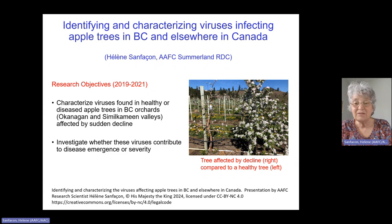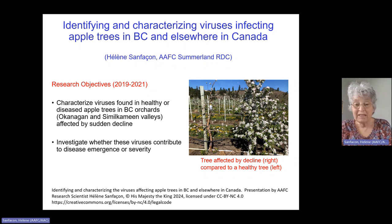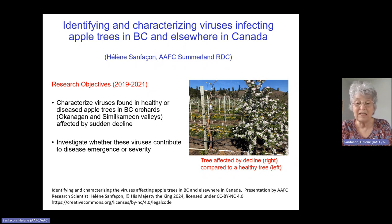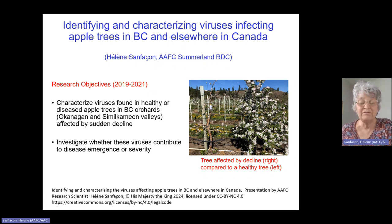Today, I'm going to discuss our results in conjunction with a large multidisciplinary project on understanding the causes of rapid apple decline disease, also referred to as sudden apple decline. This is a complex disease that emerged in BC and also in other apple growing regions in Canada and in the USA. We have a picture here of apple trees, one affected by rapid apple decline and another that is apparently healthy. It's a very devastating disease.